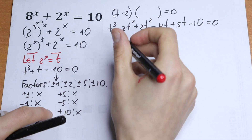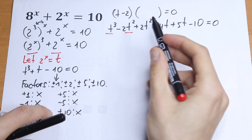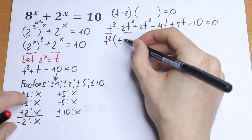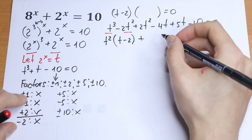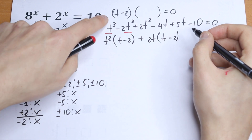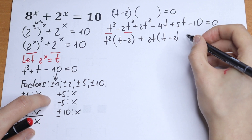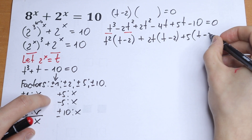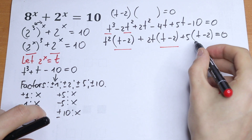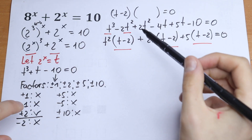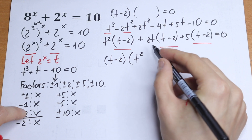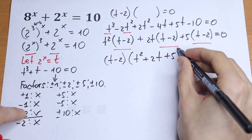From t cubed and minus 2t squared we factor out t squared, giving t squared times (t minus 2). Then we factor out 2t from plus 2t squared minus 4t, giving 2t times (t minus 2). Finally we factor out 5 from plus 5t minus 10, giving 5 times (t minus 2) equal to 0. Since all three groups share (t minus 2), we factor it out entirely, giving (t minus 2)(t squared plus 2t plus 5) equal to 0.